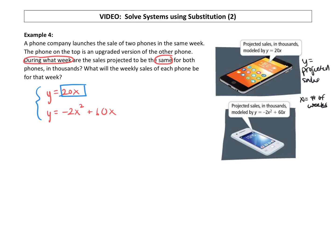I'm going to take this 20x, substitute it in for that y. So we have 20x equals negative 2x squared plus 10x. That's when the projected sales, the y's will be the same. So we're going to solve for x.